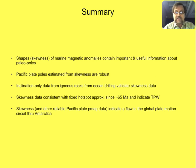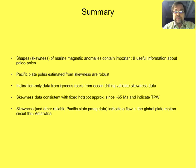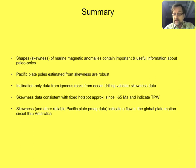The summary of the talk is that the shapes, skewness, or asymmetry of marine magnetic anomalies contain important and useful information about paleopoles. In our efforts to estimate Pacific plate paleomagnetic poles from these data, we find that the results are robust and that they agree with other reliable kinds of Pacific plate paleomagnetic data, in particular inclination-only data from igneous rocks from ocean drilling. The data we've obtained indicate that the apparent polar wandering of the Pacific plate is approximately consistent with fixed hotspots since about 65 million years ago.